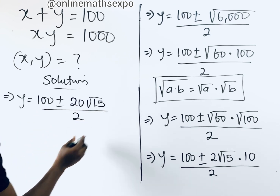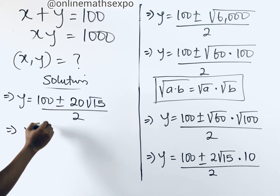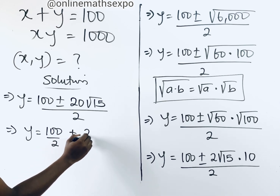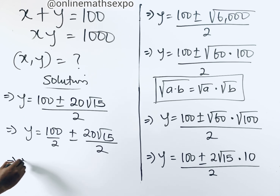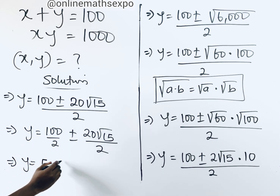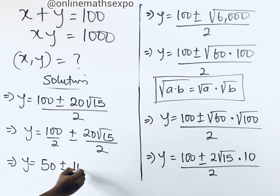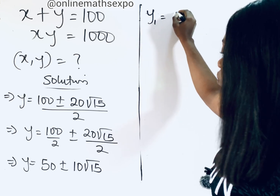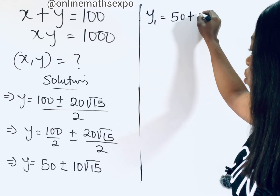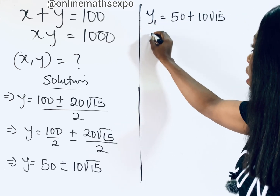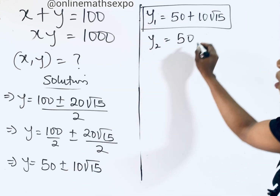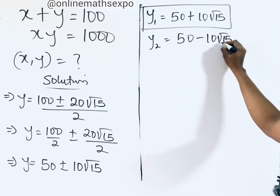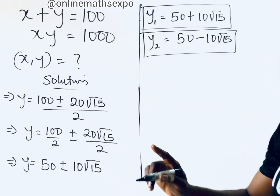Dividing both terms by 2: 100 divided by 2 gives 50, and 20 root 15 divided by 2 gives 10 root 15. Therefore the two values of y are: y₁ equals 50 plus 10 root 15, and y₂ equals 50 minus 10 root 15.